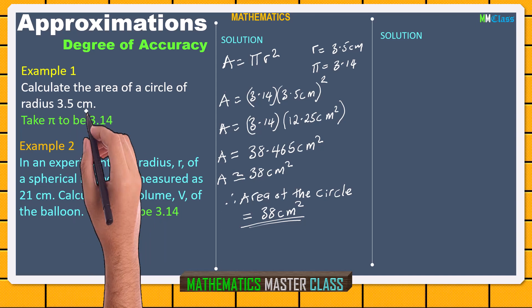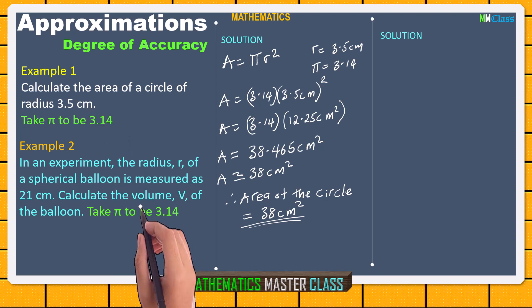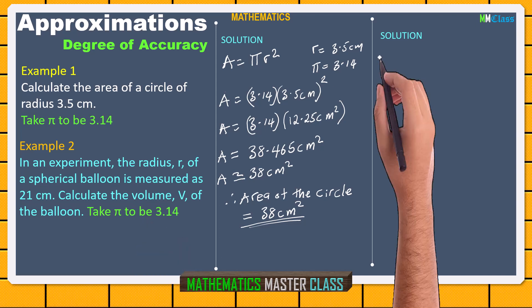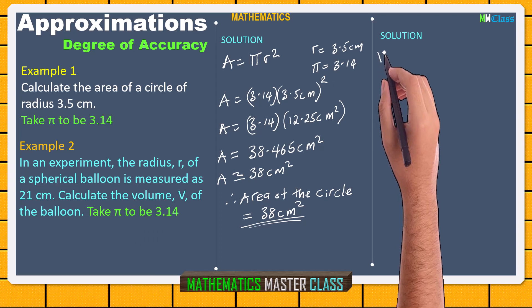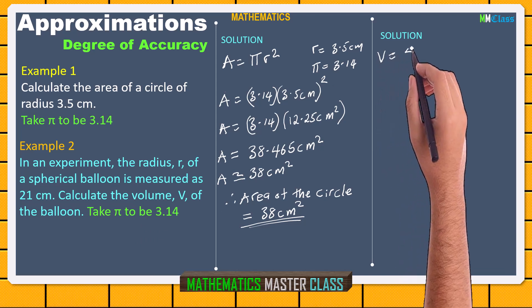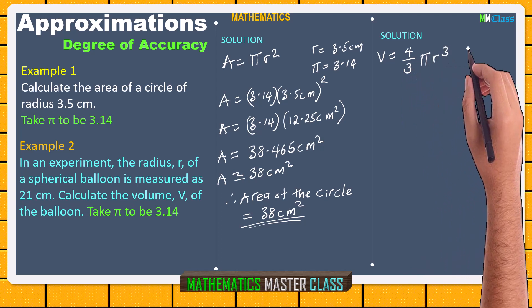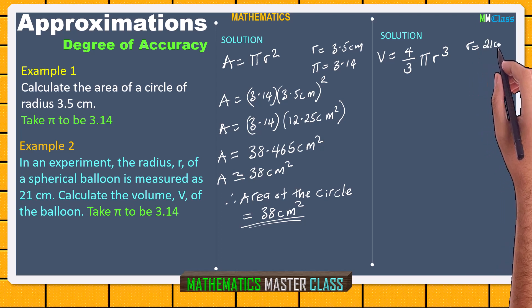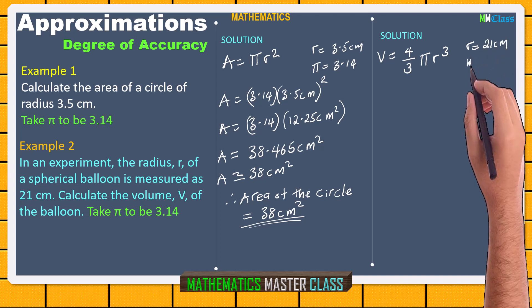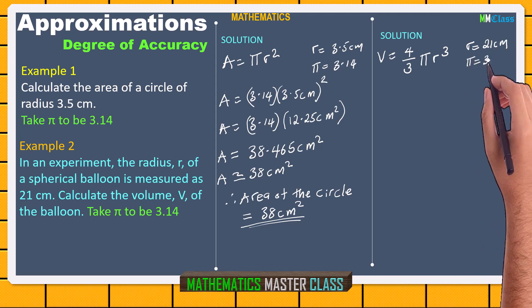Let's consider Example 2. In an experiment, the radius r of a spherical balloon is measured as 21 cm. Calculate the volume V of the balloon. Take pi to be 3.14. The volume of a spherical shape is given as V = (4/3) pi r cubed. The radius given is 21 cm and pi is 3.14.